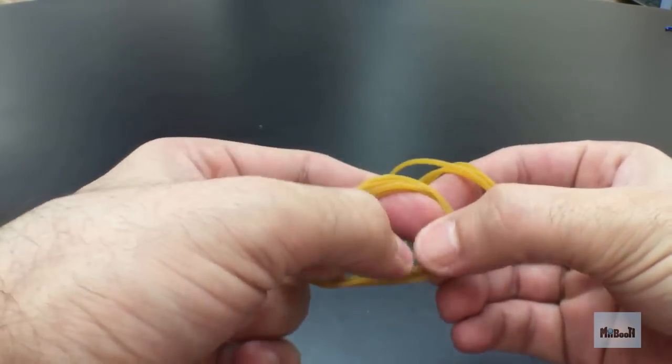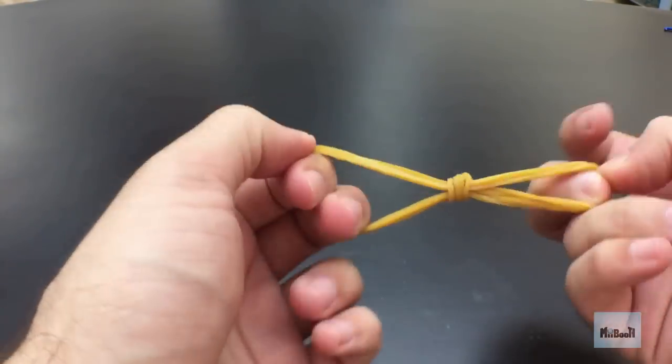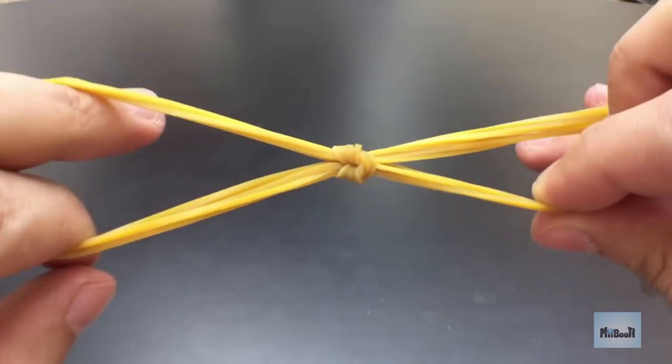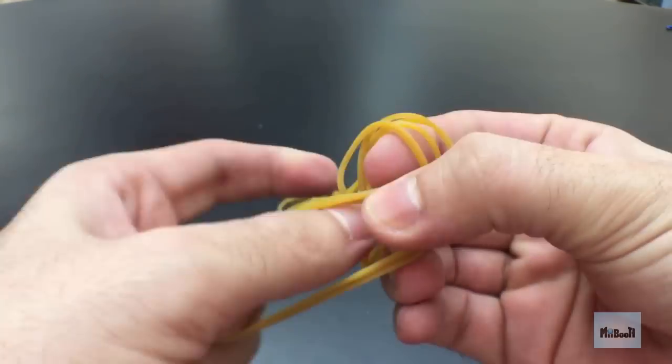Now take four rubber bands in each hand and knot them together in a reef knot like this. Do this for the other side as well.